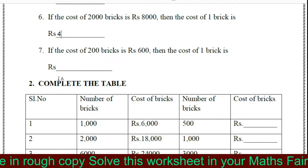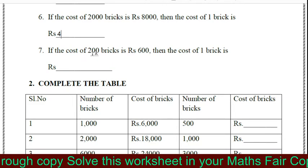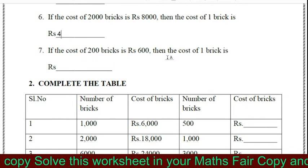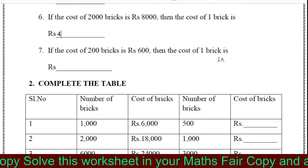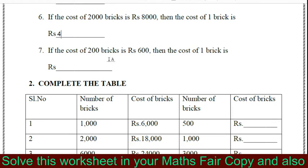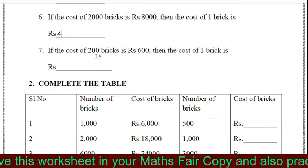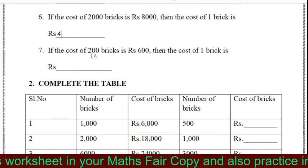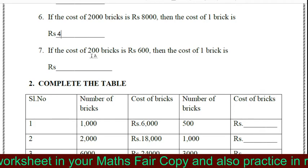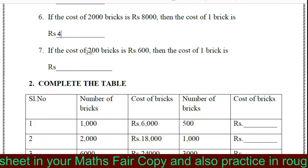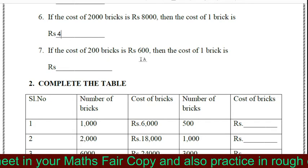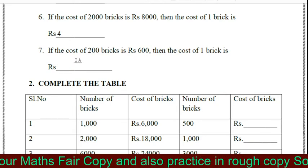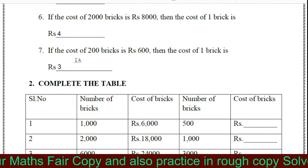The next question is: if the cost of 200 bricks is rupees 600, then the cost of 1 brick is? Similarly, using the table of 2 — 2 ones are 2, 2 twos are 4, 2 threes are 6, so 200 threes are 600. So the cost of 1 brick is 3 rupees.